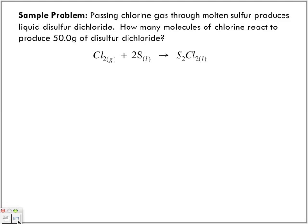What is the information that we're given? We're given 50.0 grams of disulfur dichloride. We are being asked to find how many molecules of chlorine, which means the molten sulfur is not needed.